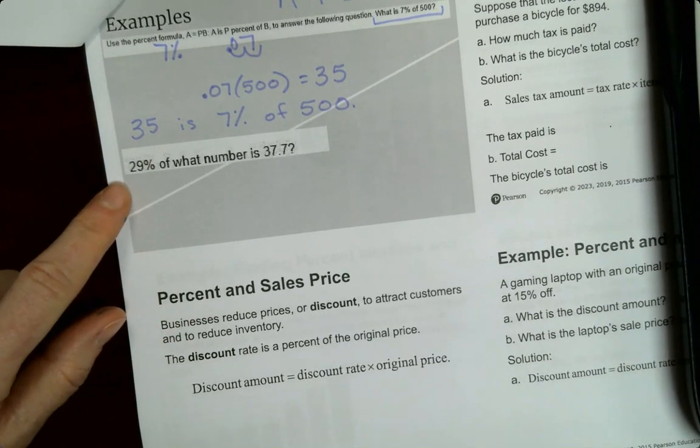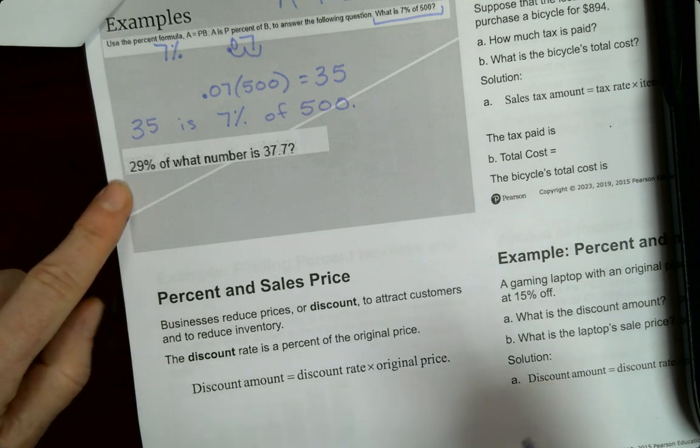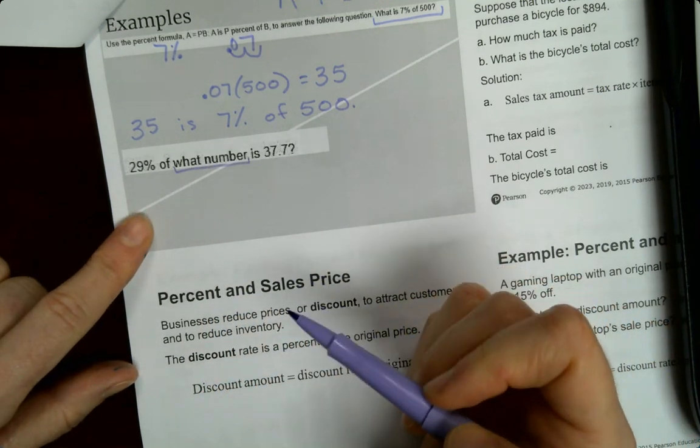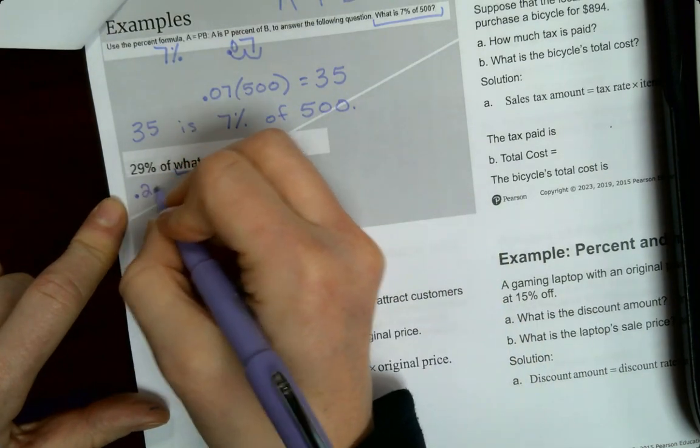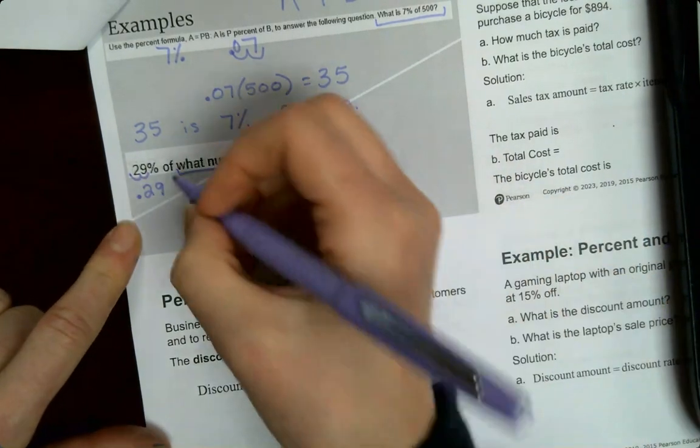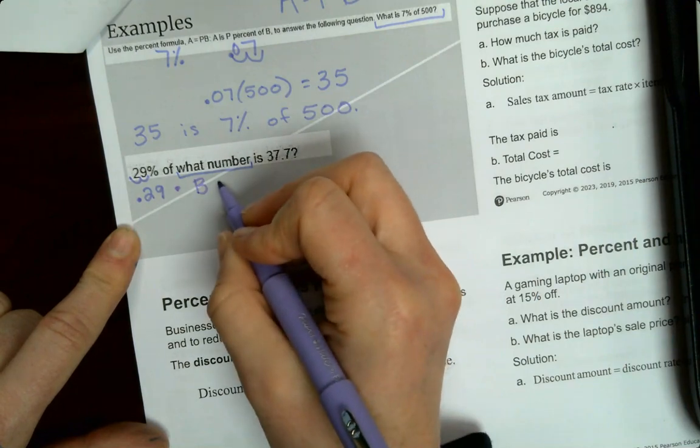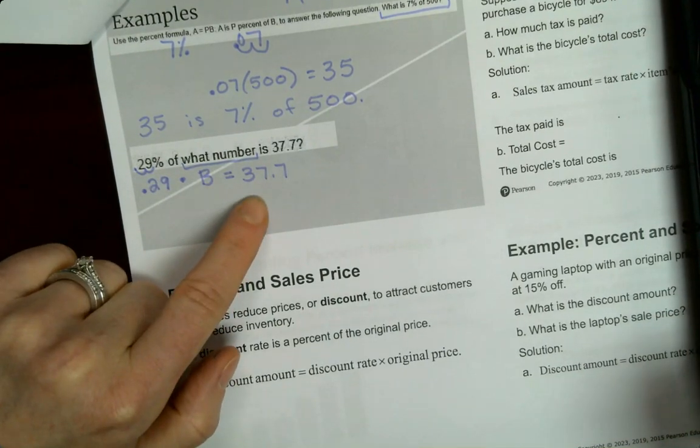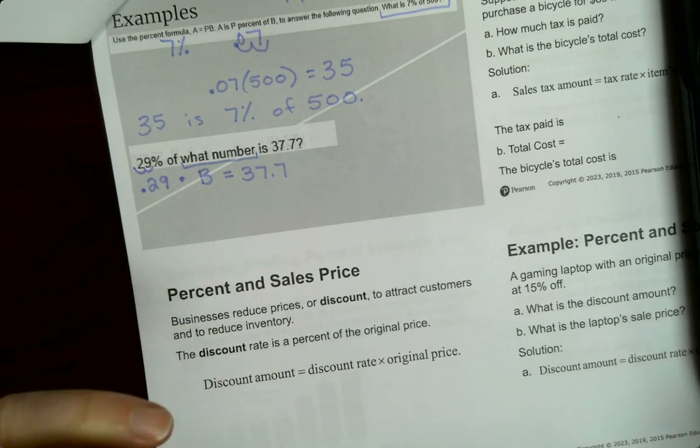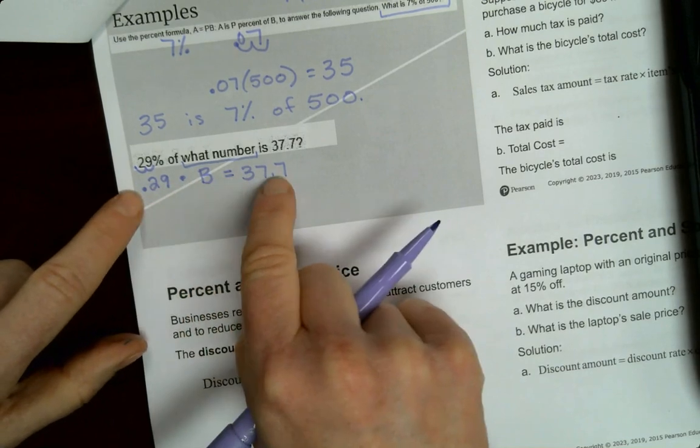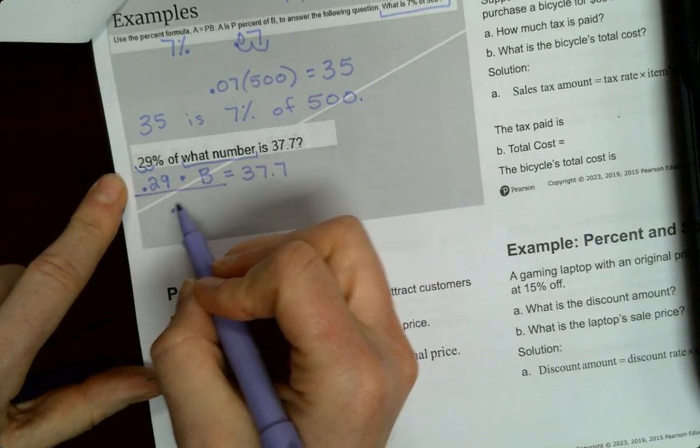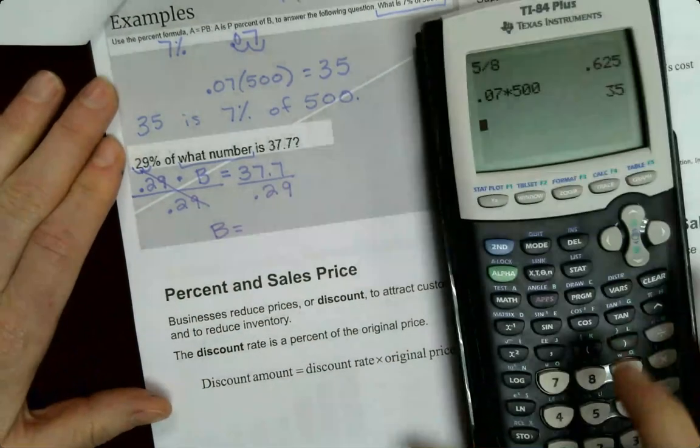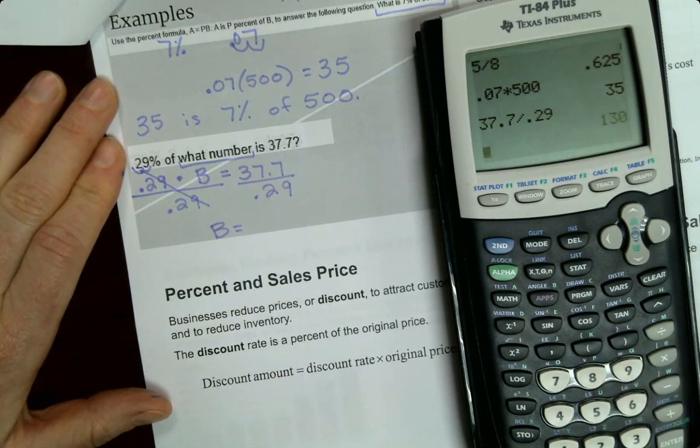The next one gives you a different kind of unknown. It says 29% of what number is 37.7. So we're looking for what the number is. So 29%, we're going to change this to 0.29 because we'll move the decimal over 1, 2. So 0.29 times some number because it says of what number equals 37.7. So 0.29 times something to get 37.7. So it's going to have to be bigger than this. The way I like to work these is like an equation where this is being multiplied with that. So to find out what this is, I'm actually going to divide by 0.29.